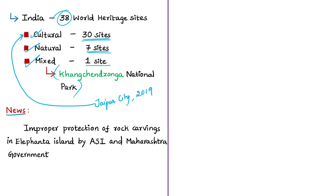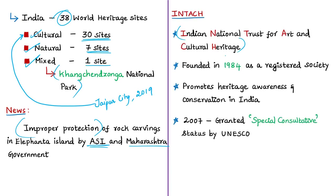The news article mentions that the spectacular carvings at Elephanta Caves are degrading due to pollution and unregulated tourism, with both the Archaeological Survey of India and the Maharashtra government failing to protect the monuments adequately. The Indian National Trust for Art and Cultural Heritage (INTACH) — a private registered society founded in 1984 to promote heritage awareness and conservation in India, which was granted special consultative status by UNESCO in 2007 — has commented on the environmental threats to Elephanta Island.